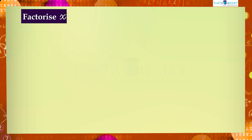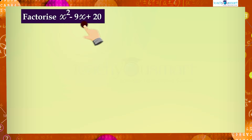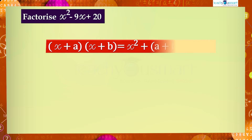Let's see another example. Factorize x² − 9x + 20. We can factorize this expression using the identity (x + a)(x + b) = x² + (a + b)x + ab.